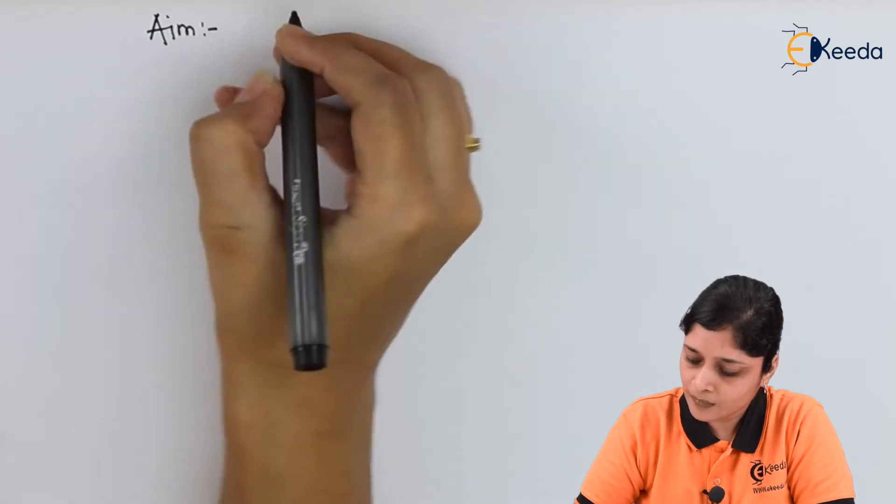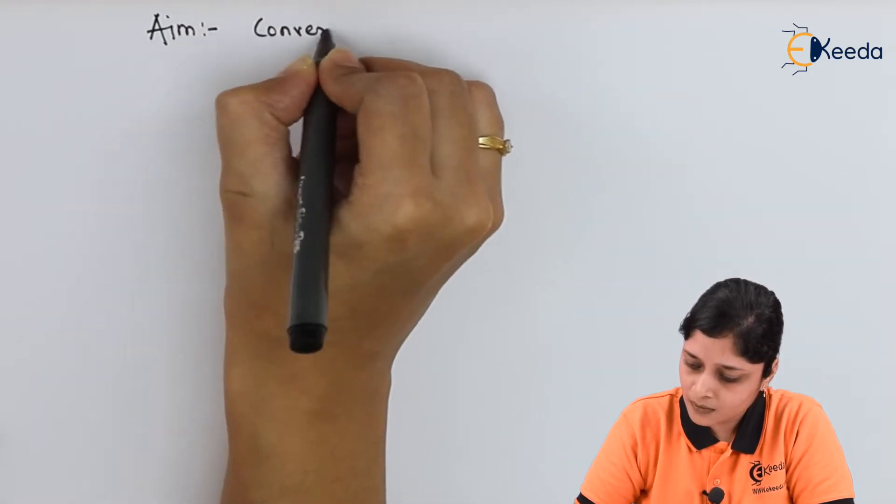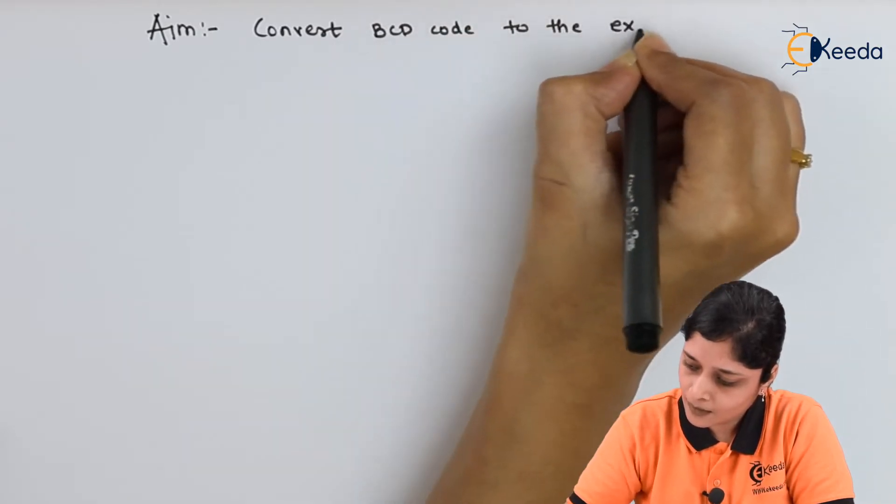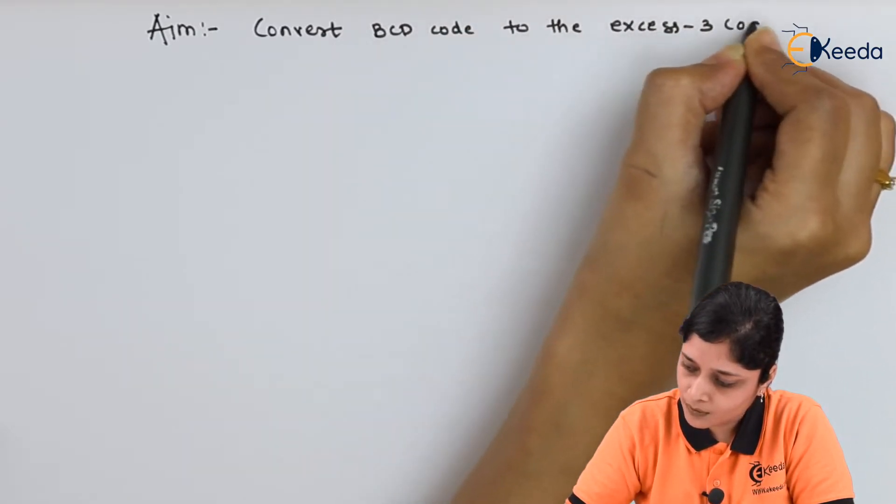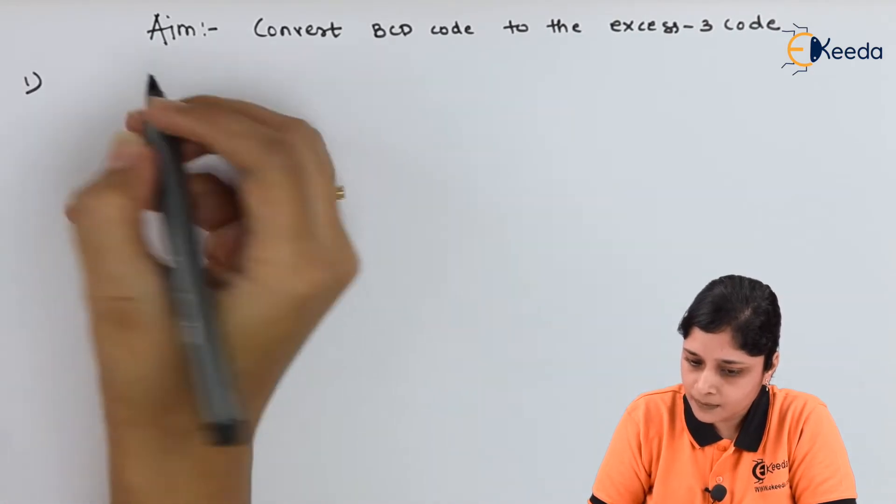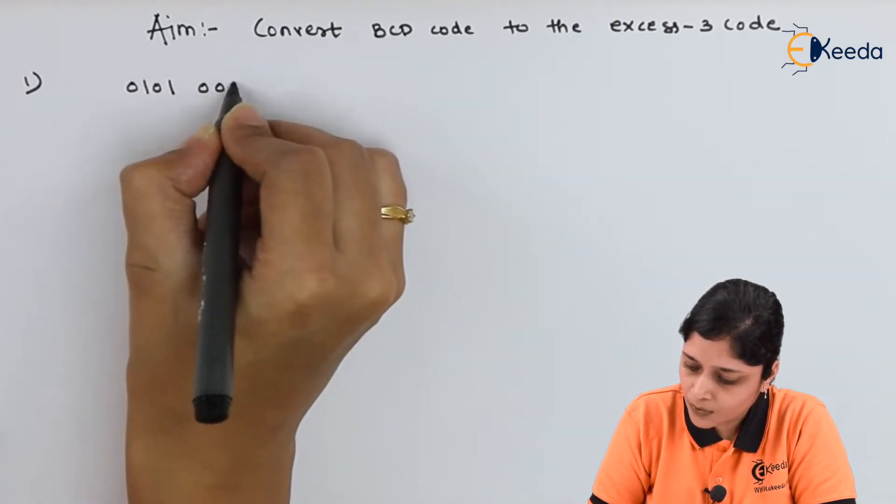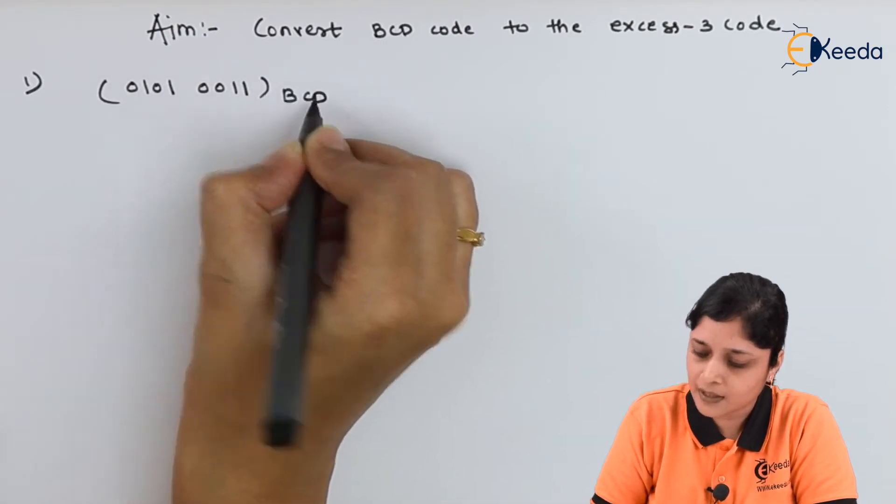So let's start with the example. Write down convert BCD code to the XS3 code. You have example 01010011 to the base BCD.